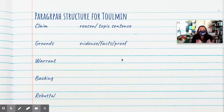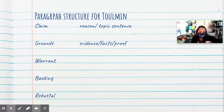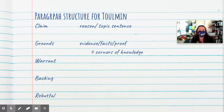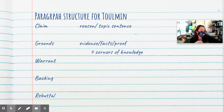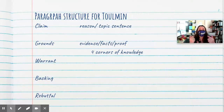The grounds is our evidence. It's our proof. It's our facts. It's that information, and again, it's that specificity. It is that specific situation, that specific person that went through this. It is that example of what your reason looks like. So this is why I want you to know your four corners of knowledge, because you can pull that information from your personal life, from a movie or book that you have read or seen, from something that's going on in the world right now, or something that happened in the past. But stay away from clichés. Your grounds is your proof — your evidence, your example in real life of what your reason looks like. Show me what it looks like. Give me an example.